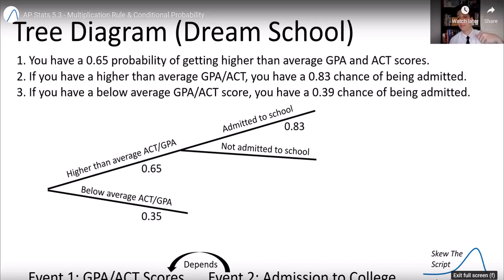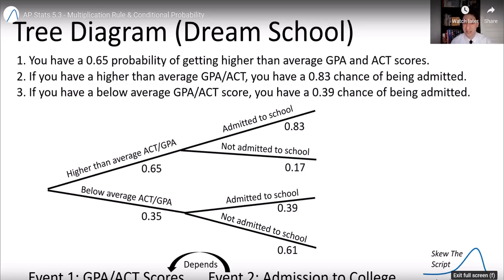So that means the rest of the probability, there's only a 17% chance of not being admitted. In the alternative universe where you had a below average ACT and GPA, you have a 39% chance of being admitted and actually have more than half chance of being not admitted, 61% because that's the one there.